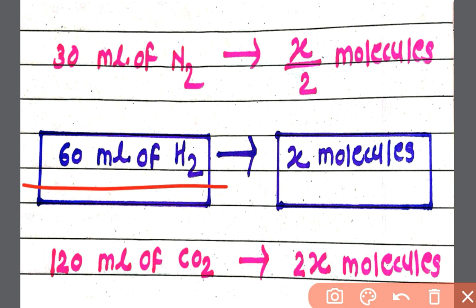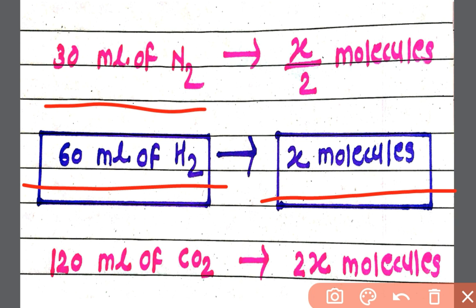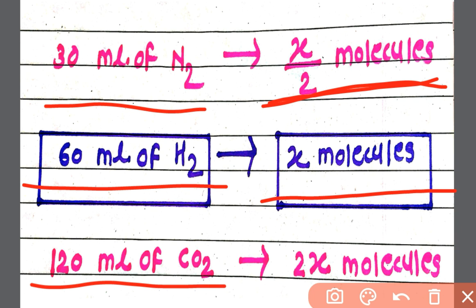If 60 ml of H2 gives X number of molecules, then 30 ml of N2 will give X/2 number of molecules, because the volume is halved so the number of molecules will also be halved. For the third case, 120 ml of CO2 — the volume is double — therefore the number of molecules from this gas will also be double, that is 2X number of molecules.